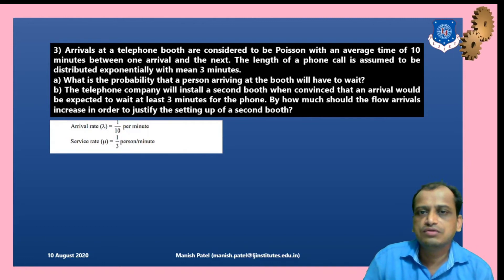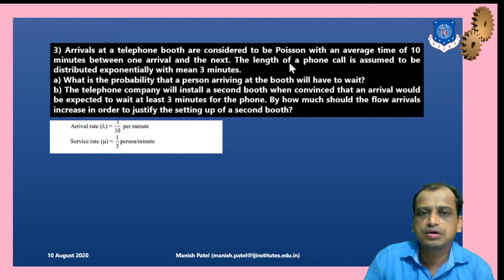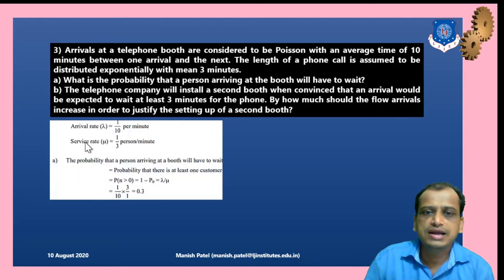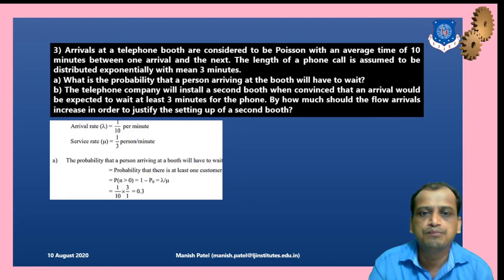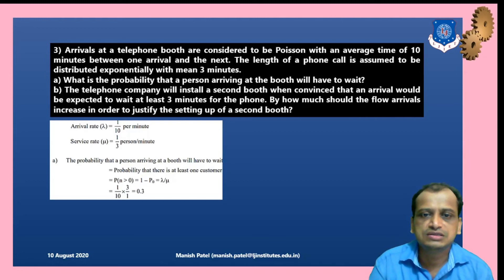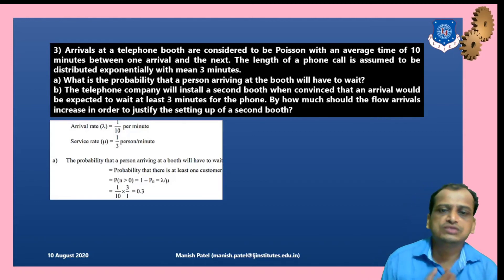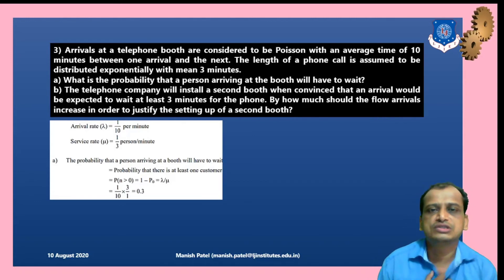Converting to per-minute rates: λ = 1/10 per minute, μ = 1/3 per minute. The probability that a person arriving will have to wait is P(wait) = 1 − P₀ = λ/μ = ρ. The traffic intensity ρ = (1/10)/(1/3) = 0.3, so the customer has to wait about 30% of the time.